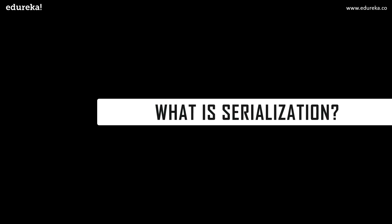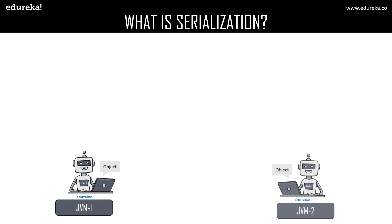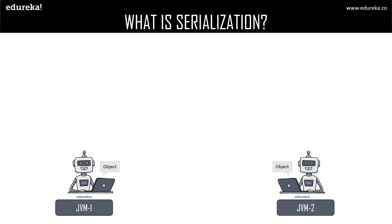Let us get started with our first topic: what is serialization? To understand serialization in a much better way, let us consider a simple example where we have two different JVMs at two different locations. Let us assume that JVM one is executing a particular object and the same object is expected to be executed in JVM two as well. The only way would be transferring this object from JVM one to JVM two.